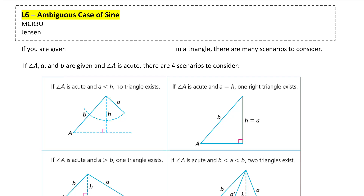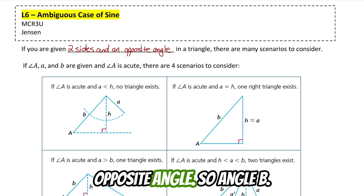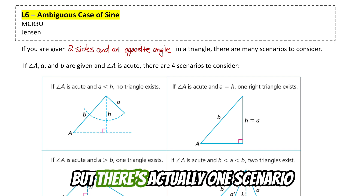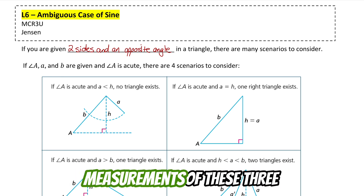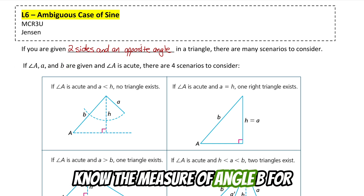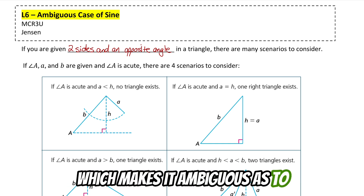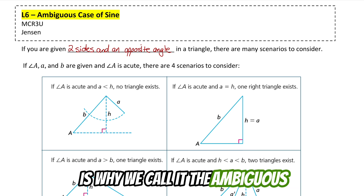Here's a lesson on the ambiguous case of sine. If you're given two sides and the angle opposite from one of those two given sides in a triangle, there are many scenarios to consider. When given two sides and an opposite angle, you could use sine law to solve for the other opposite angle, angle B. But there's one scenario where we might not be able to know the measure of angle B for sure — there might be two possibilities, making it ambiguous, which is why we call it the ambiguous case of sine.